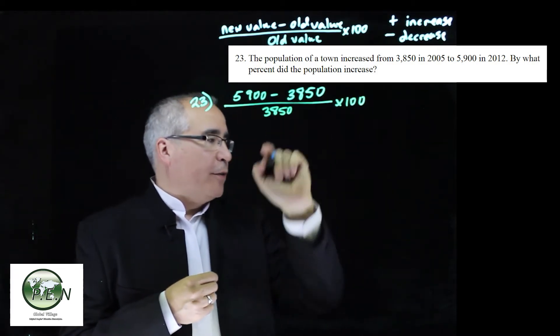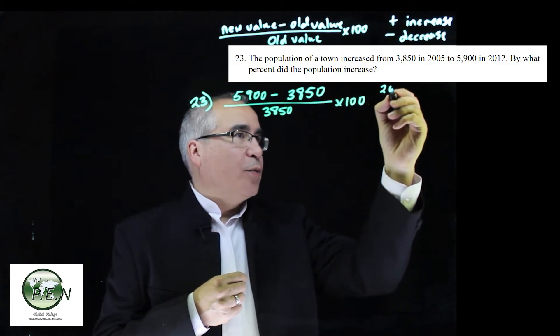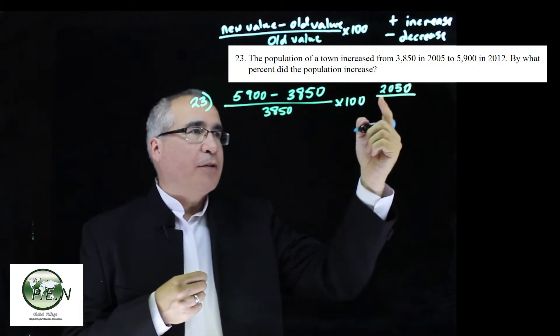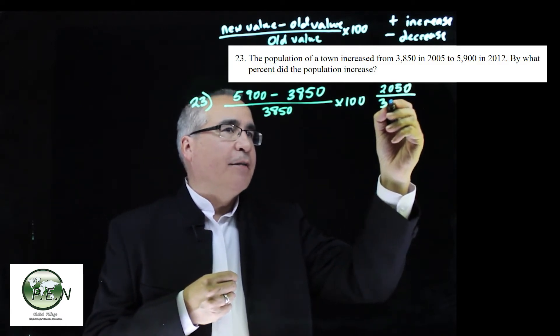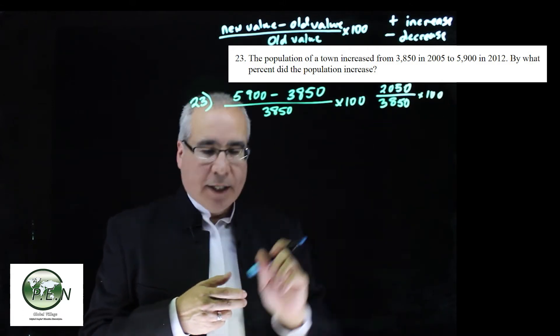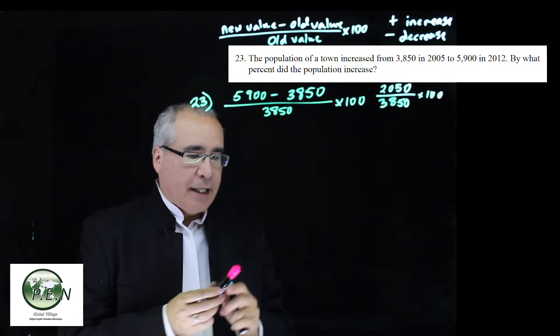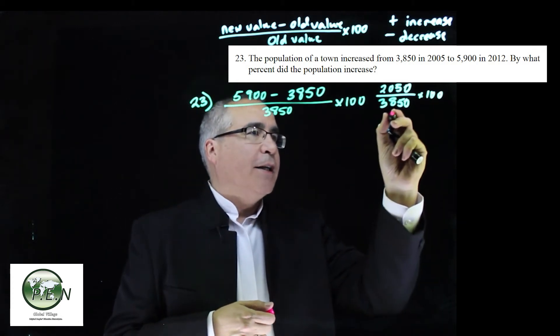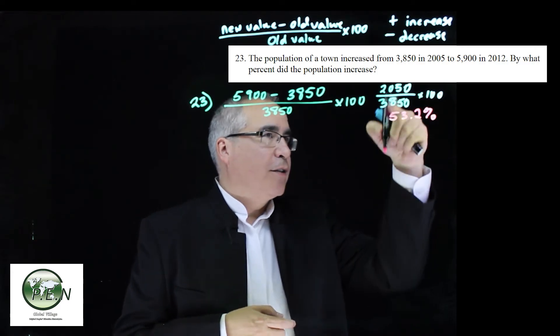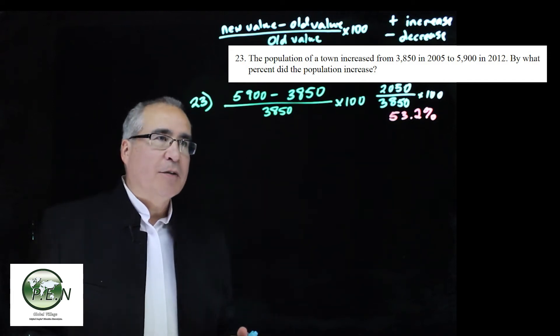We will always divide by the old and multiply by 100 to turn it to a percentage. When we do the subtraction, we get 2,050 and that's the absolute change, the amount of change. And then we divide by 3,850 and multiply by 100. And we get as our final percent change, that that is a 53.2 percent change. Just use the calculator. Divide and multiply. Just like we've been doing before.